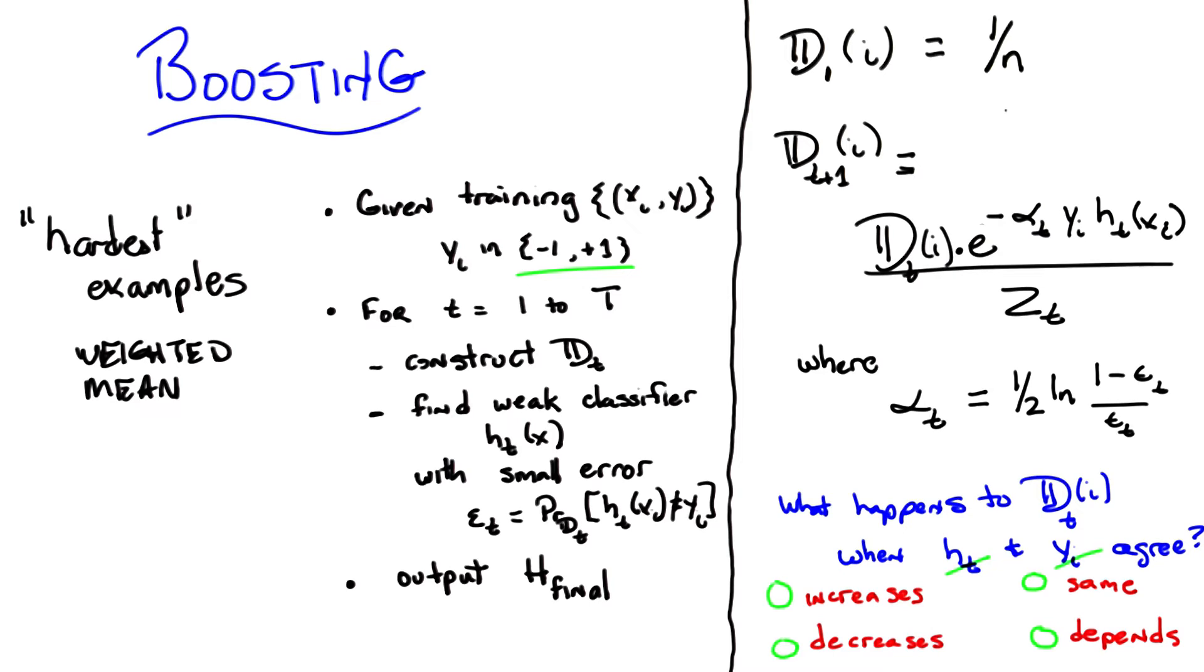Okay, so you have four possibilities when they agree. One is, the probability of you seeing that particular example increases. That is, you increase the value of d sub t on i. Or the probability of you seeing that example decreases. That is, the number d sub t sub i goes down. Or, it stays the same when they agree.